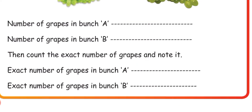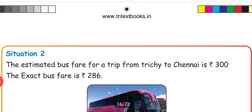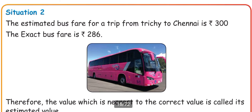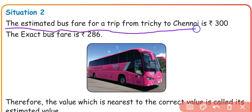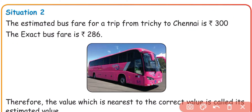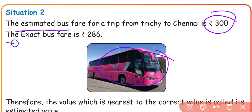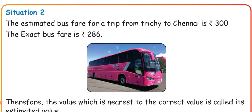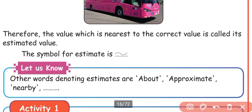Estimation gives an approximate value. For example, the estimated bus fare for a trip from Trichy to Chennai is Rs. 300. The actual bus fare is Rs. 286. The estimated bus fare for Trichy to Chennai is Rs. 300, but the actual bus fare is Rs. 286.